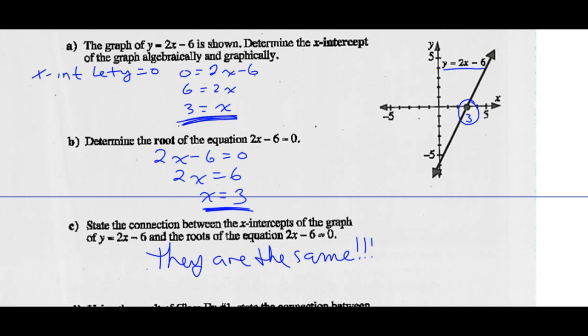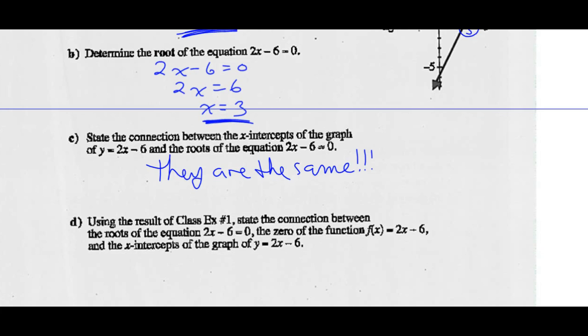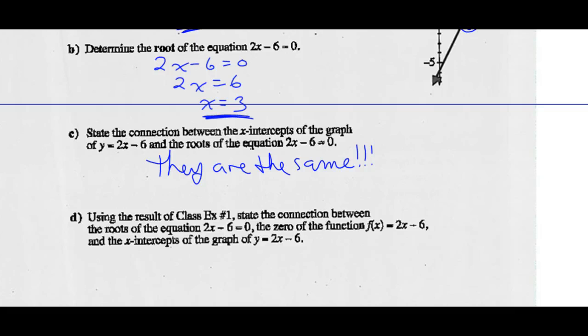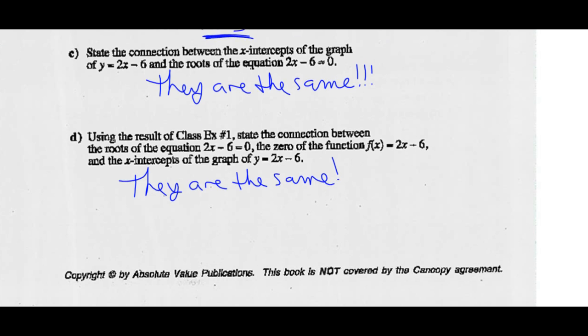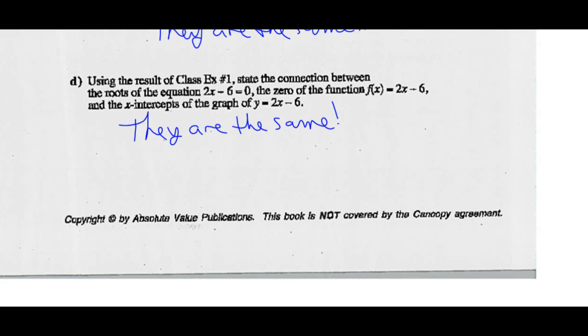State the connection between the x-intercepts of the graph of y = 2x - 6 and the roots of the equation 2x - 6 = 0. The roots of this equation when y = 0 is the exact same as finding the x-intercept of the graph. The relationship is they are the same — all those things mean the same thing.